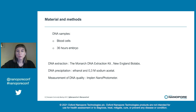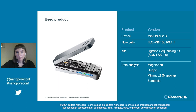For DNA extraction, the Monarch DNA Extraction Kit by New England Biolabs was used. This was followed by precipitation with ethanol in the presence of sodium acetate. DNA concentration and quality were measured using the NanoPhotometer. High-quality DNA samples were processed using the nanopore ligation sequencing kit SQK-LSK-109 to prepare the sequencing libraries, which were sequenced using the MN-R9.4.1 flow cells.